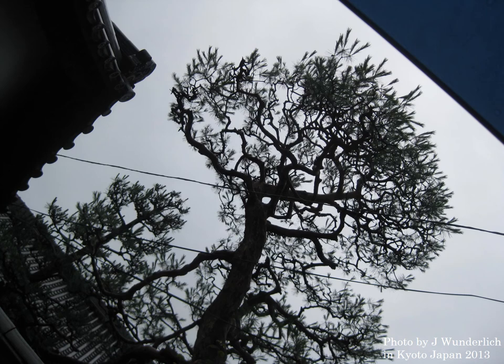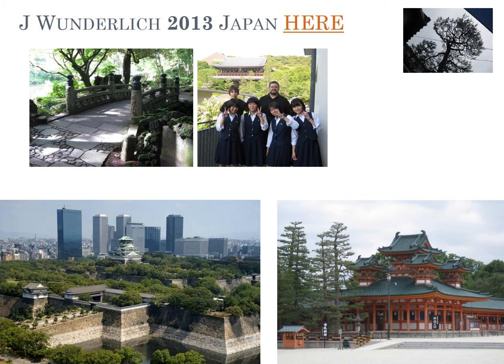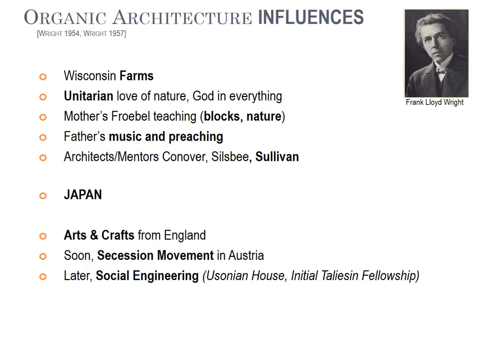Here's a link to some Japanese architecture and design travels — I was a keynote speaker in Osaka and spent two weeks in Kyoto, flying into Narita and taking the bullet train from Tokyo to Osaka. You'll likely hear a whole separate lecture on that. Summarizing the influences on his organic architecture: the Wisconsin farms, the Unitarian love of nature and God, his mother's Froebel block teaching, his father's music and preaching. His architect mentors: Conover, Silsby, and Sullivan. Japanese things. And soon we'll see arts and crafts from England and America.